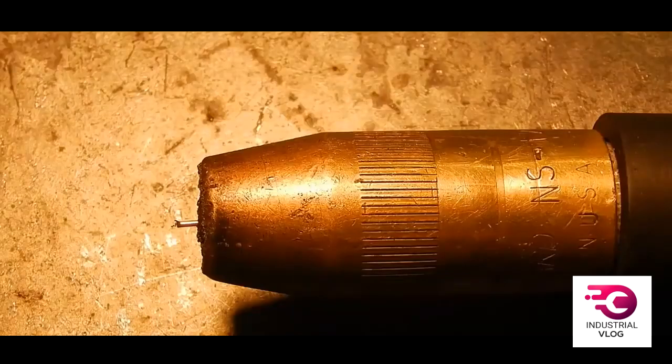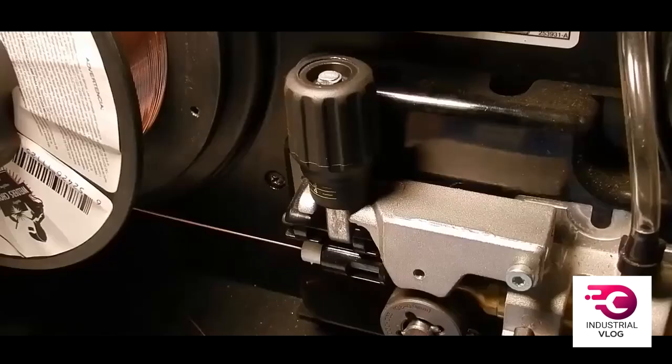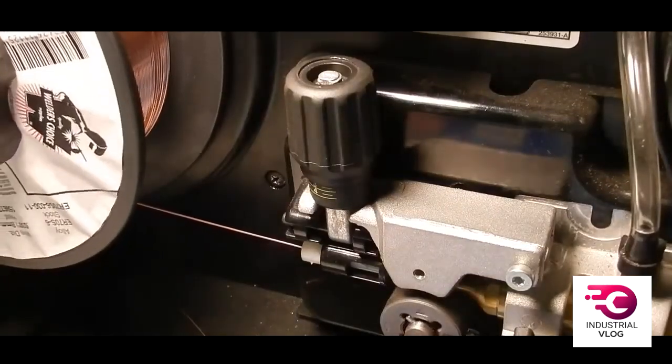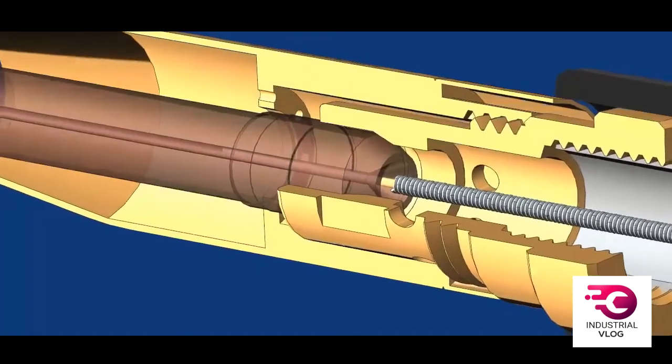In MIG welding, a thin wire acts as the electrode. This wire is fed from a spool mounted on a gun or inside the welding machine, through a flexible tube, and out of the nozzle on the welding gun or torch.